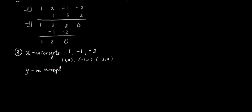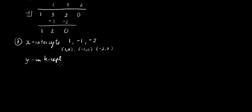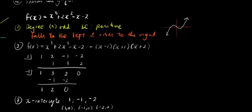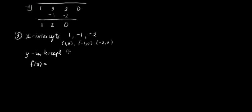For y-intercept, let's set x to 0. Going back to the function f of x equals x cubed plus 2x squared minus x minus 2. If we substitute 0 here, this becomes 0, this is also 0, this is also 0, leaving negative 2. So our y-intercept is negative 2. The graph touches at (0, -2).